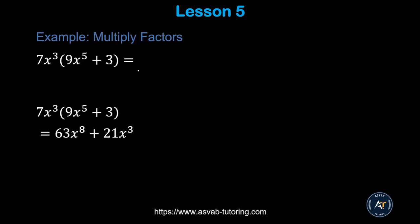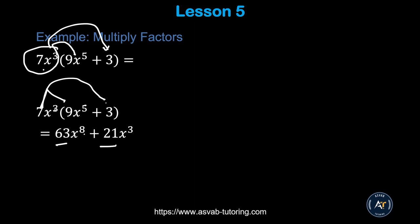Now we'll learn how to multiply expressions with a variable. Here we have 7x³ times the quantity (9x⁵ + 3). You have to distribute 7x³ with both terms. So 7 times 9 is 63, and x³ times x⁵ gives you x⁸, so that term is 63x⁸. Then 7 times 3 is 21, and x³ times 1 gives x³, so the second term is 21x³. Make sure that you understand — this covers a lot for your officer candidate exam.